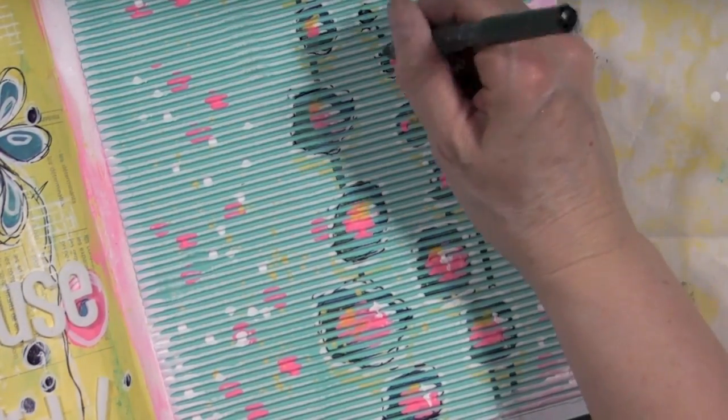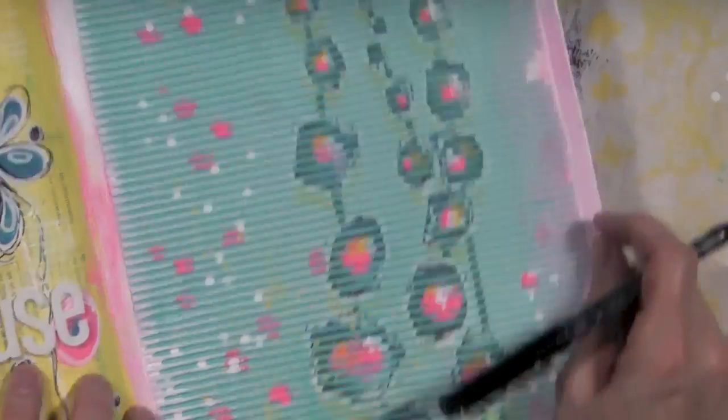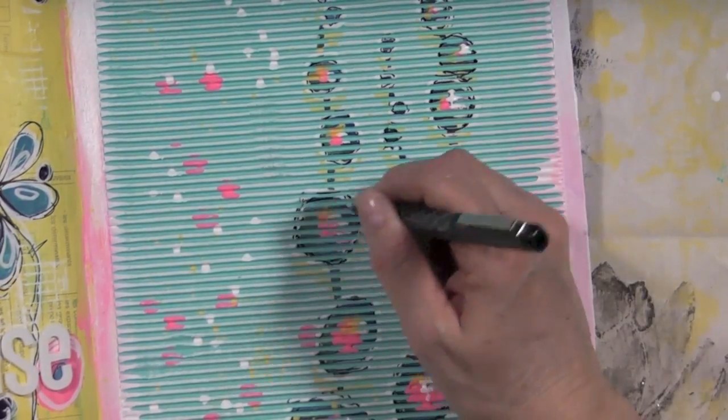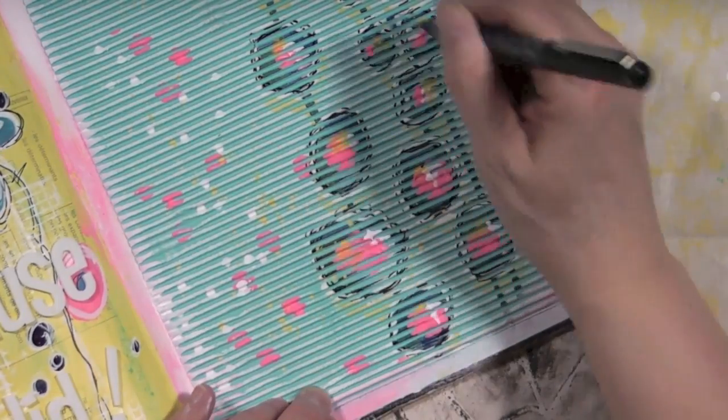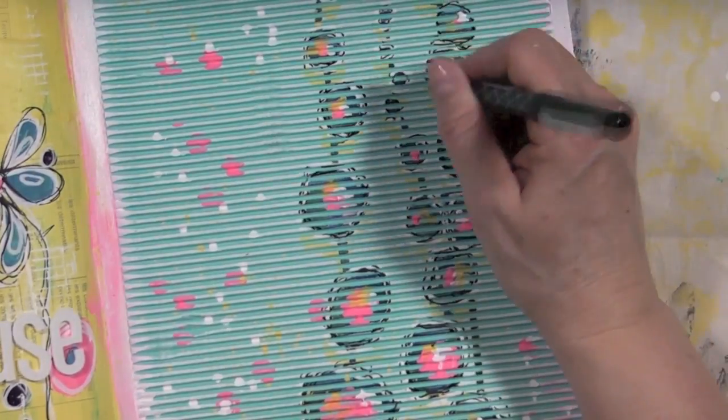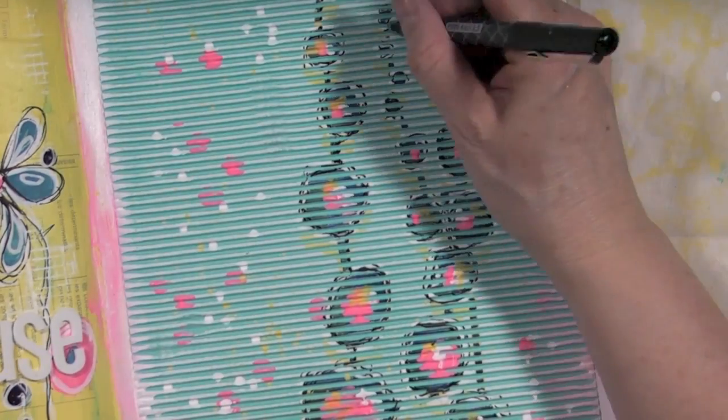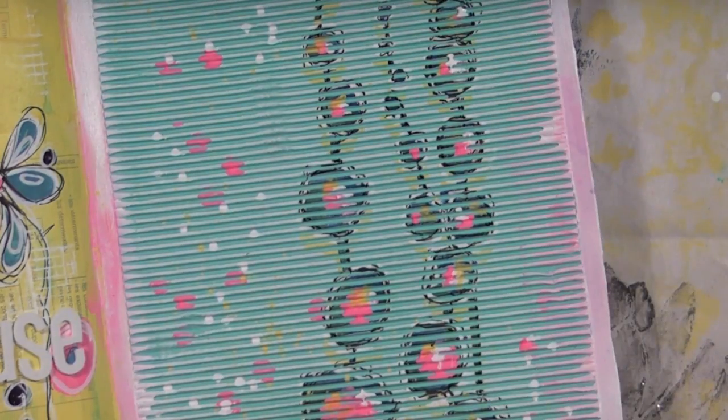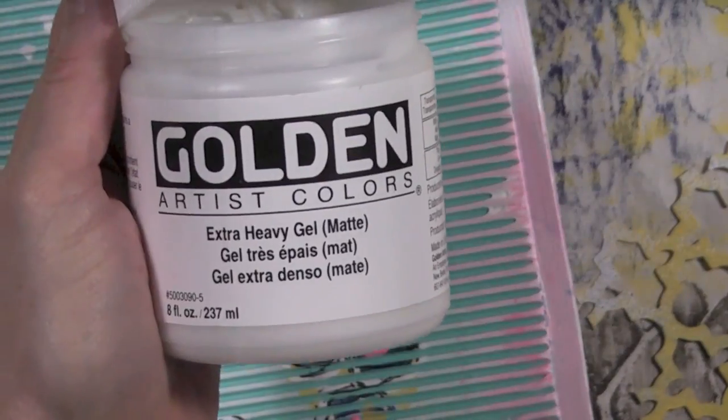I am going around the flowers once again with a football pen and this will definitely make them pop even more. I like the football pen for this because it has a broader tip than the one that I usually use which is the Perma Ball pen. This has got a 1.5 tip to it or point.